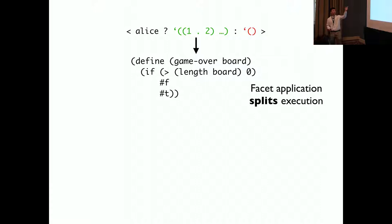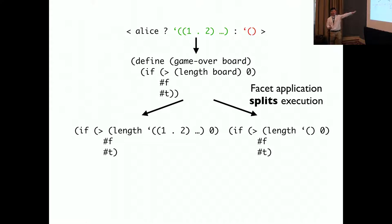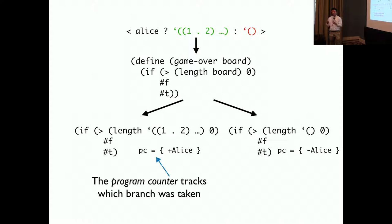First, we pass the facet value Alice board, empty board into the function gameOver. Facet application splits the execution into two branches. The left one is a positive branch, positive label branch. And the right part is a negative label branch. And we also update the program counter by adding the label into it, so that you can check which branch was taken.